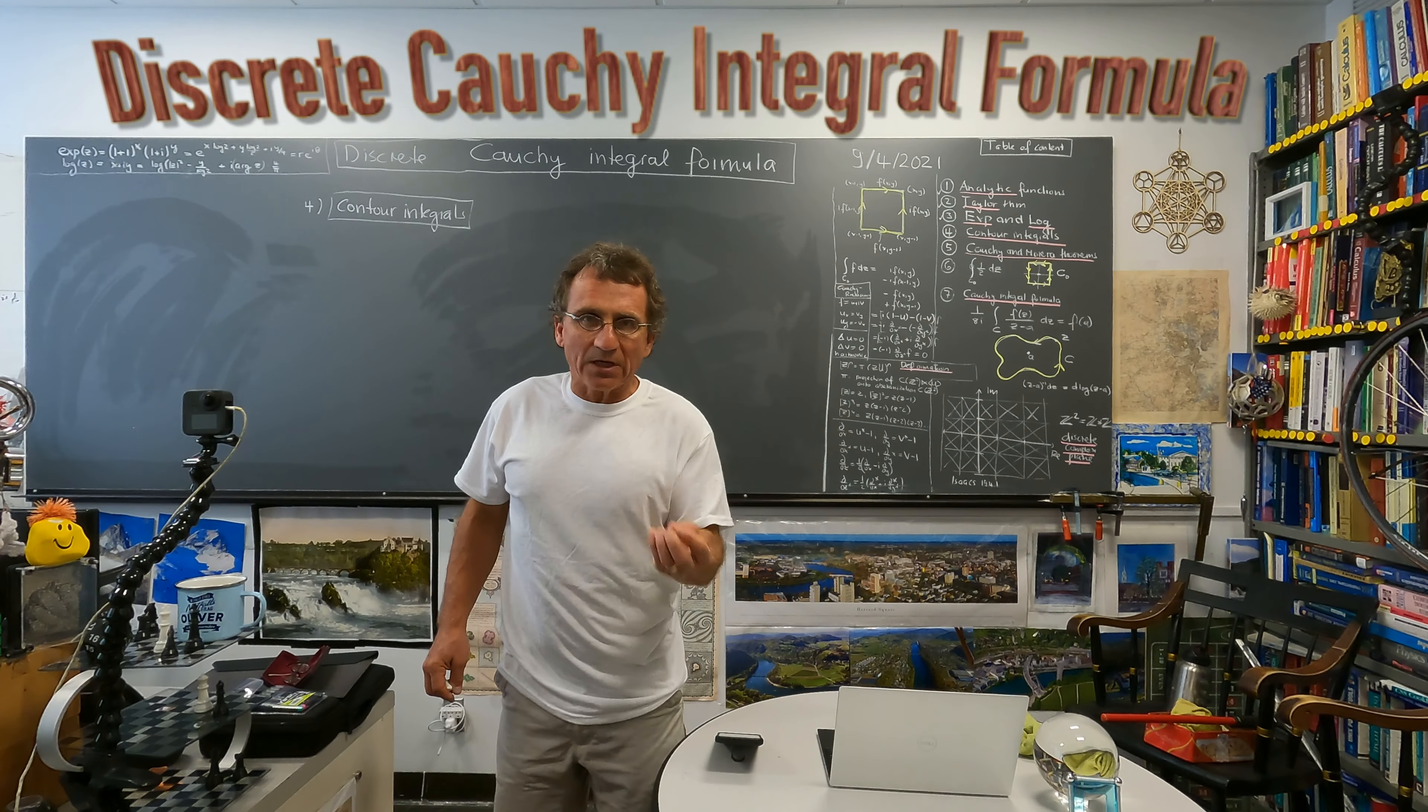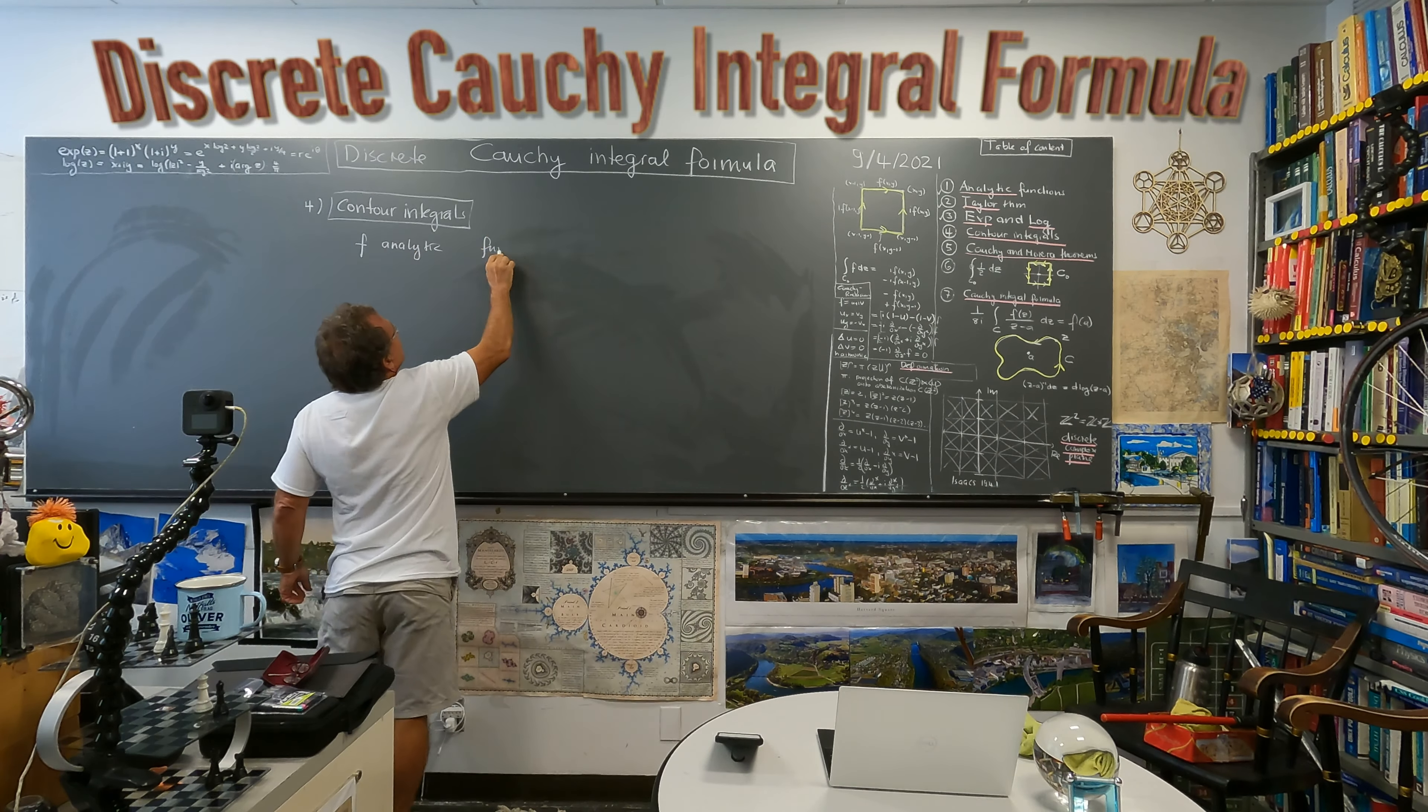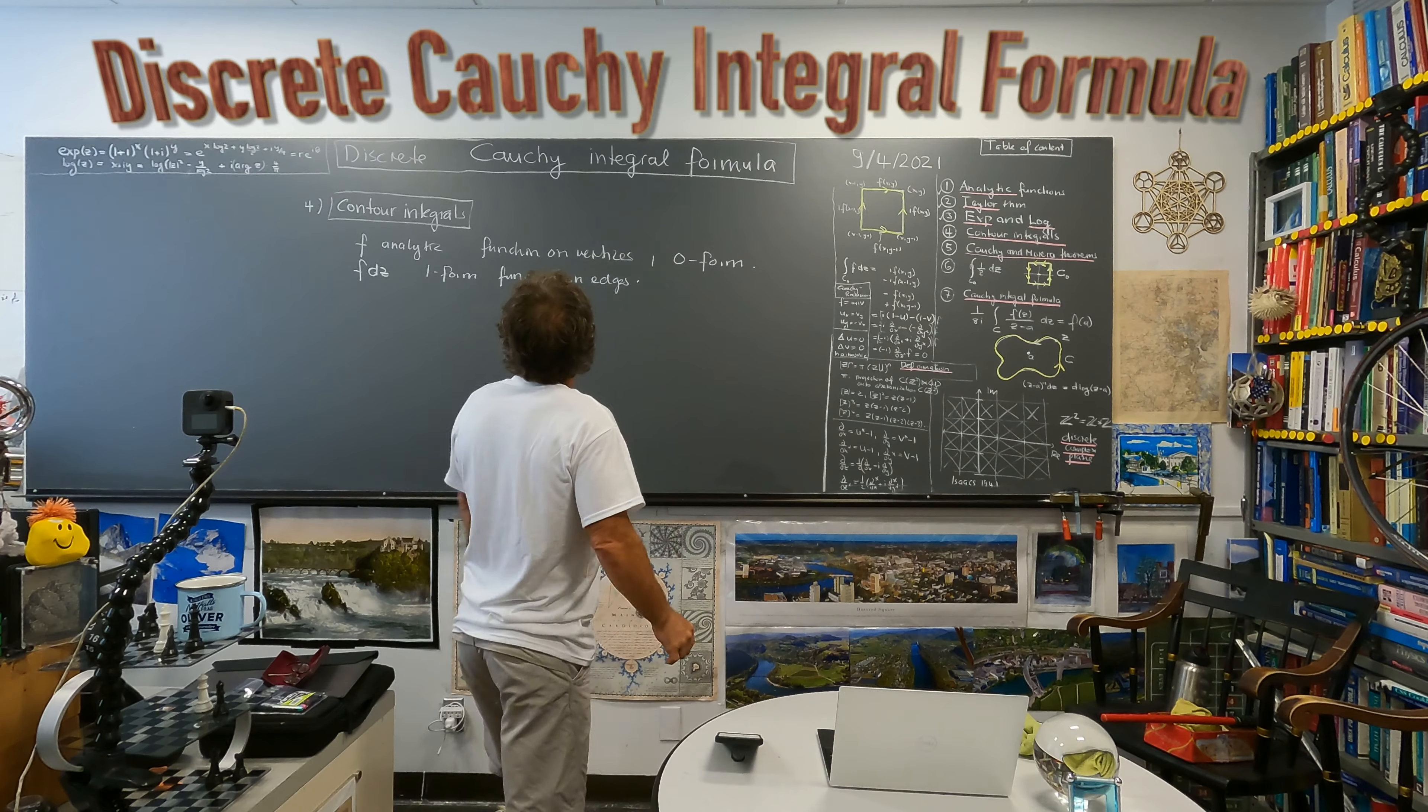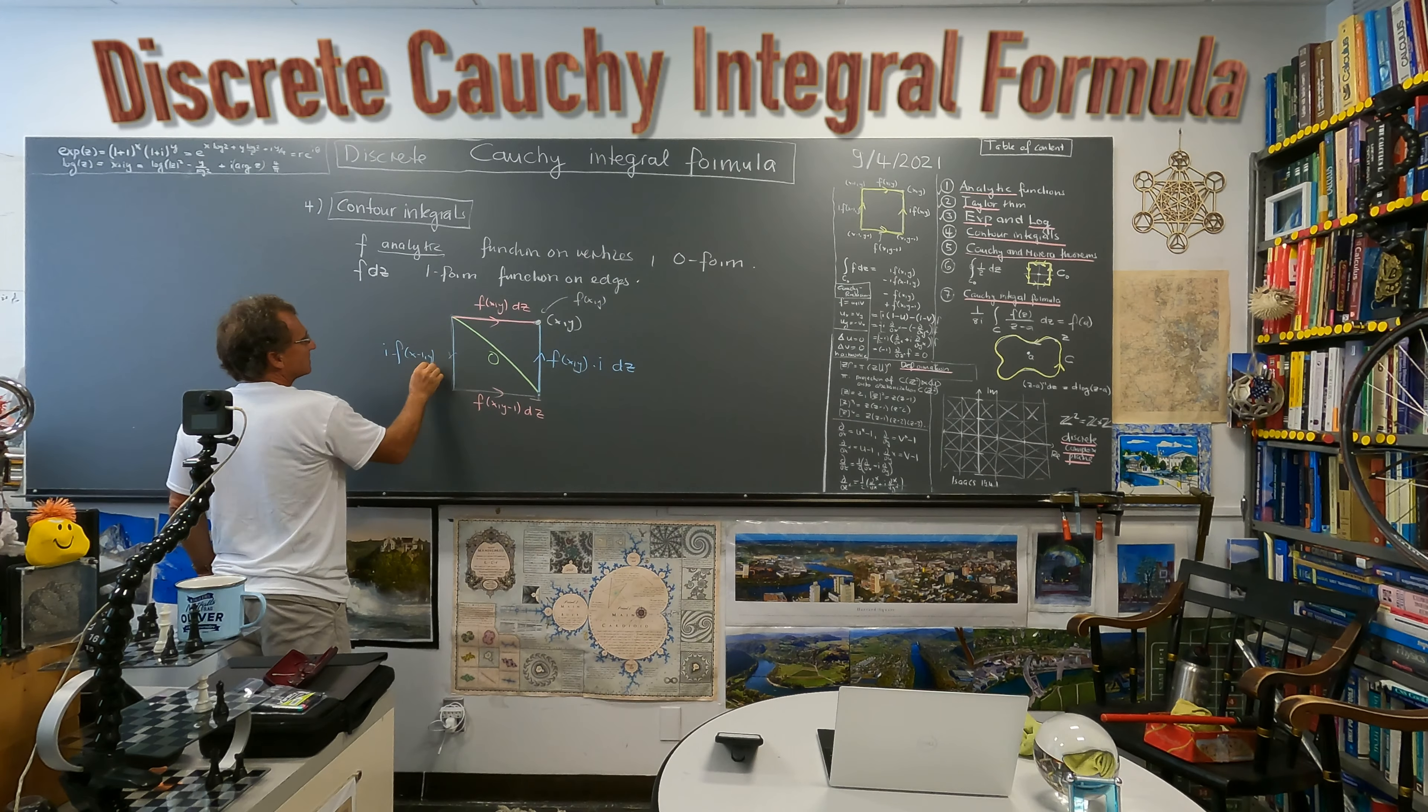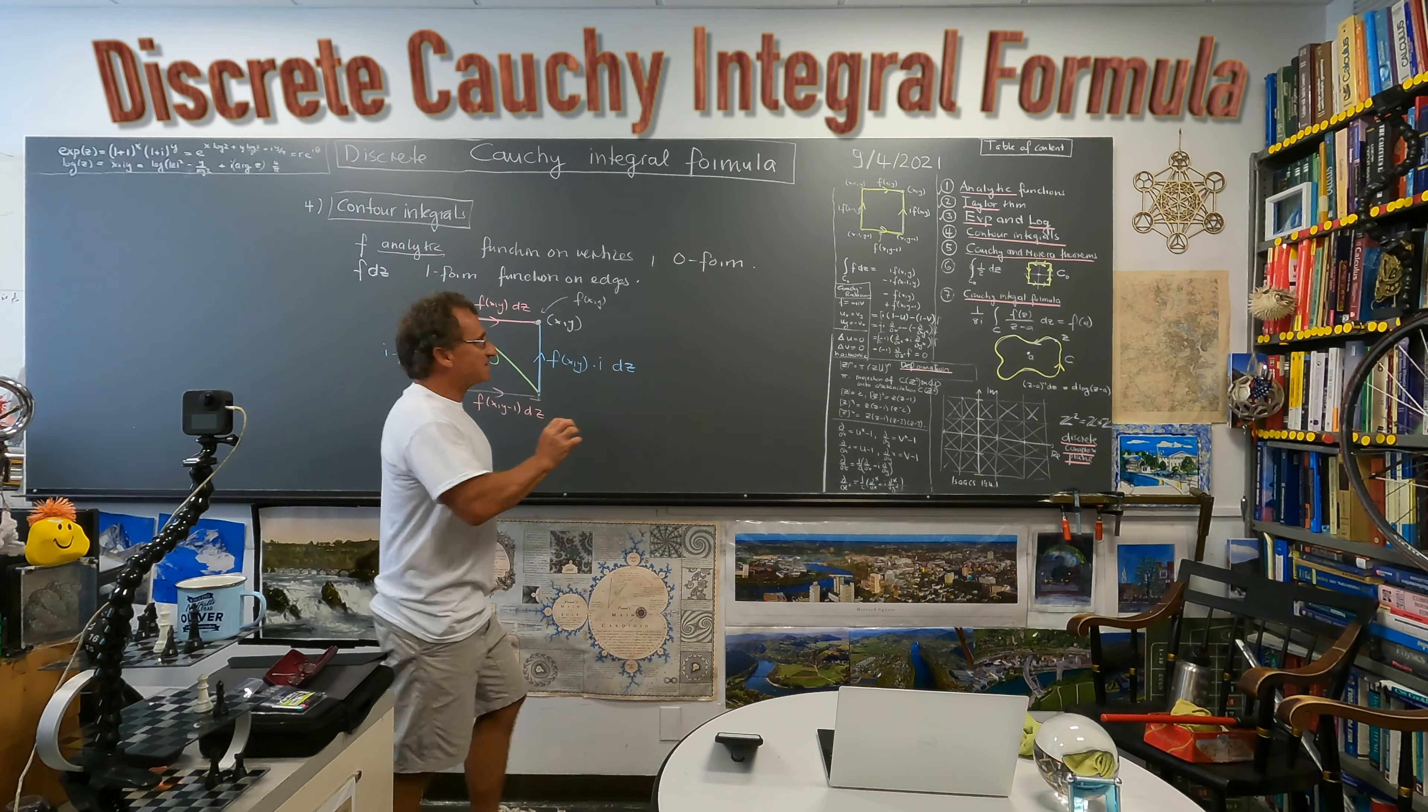So it's very important in the discrete that we distinguish between zero forms and one forms even in one dimension because zero forms are functions on vertices and one forms are functions on edges. So we have to say how we actually go. So we have a function which is analytic and f dz this is a one form so we have to say what we actually do. So f x y minus one dz and on this side here we take f x y f x minus one y dz.